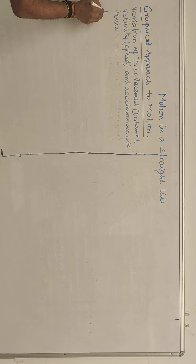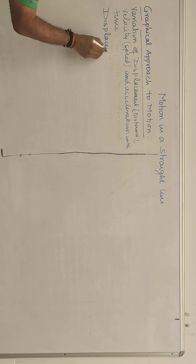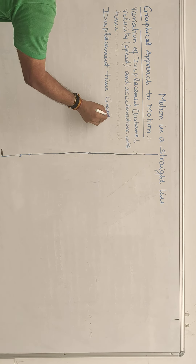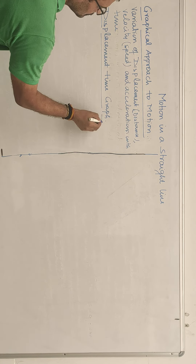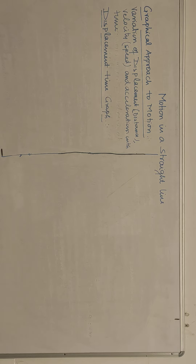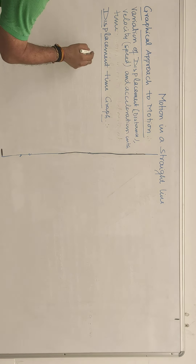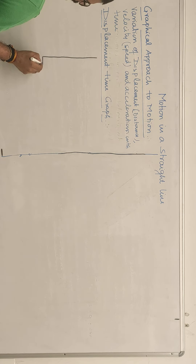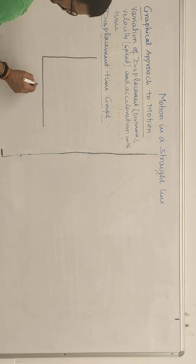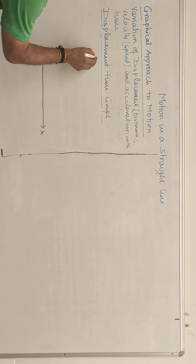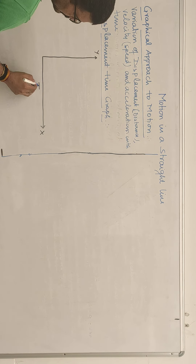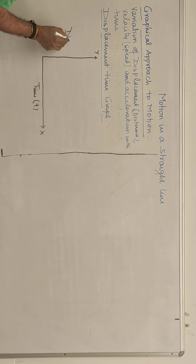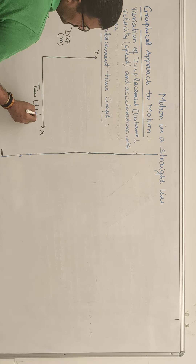We will start with the displacement-time graph. In a displacement-time graph, you will always consider time along the x-axis and displacement in meters along the y-axis, with time in seconds.